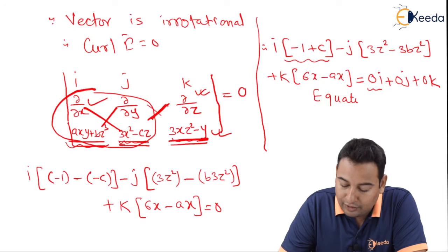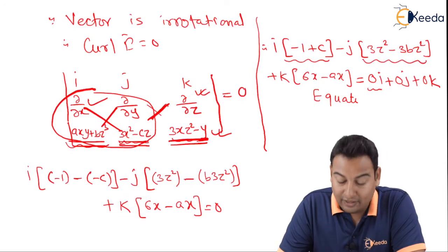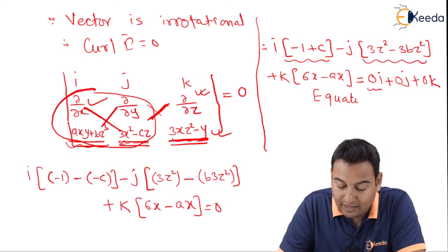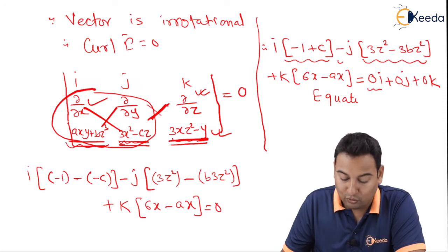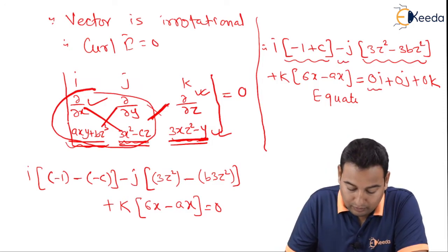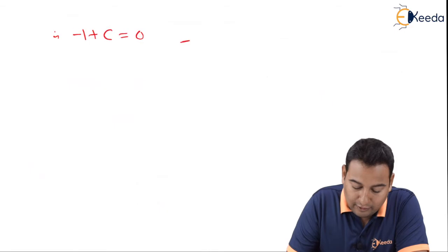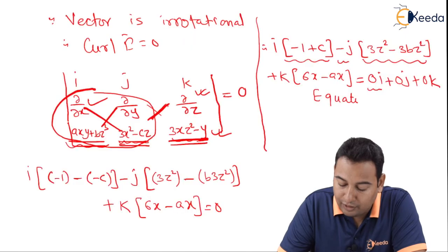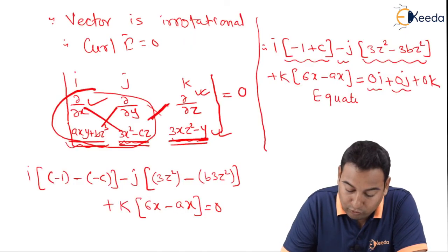With j, here we have 3z squared minus 3bz squared, with this minus also. That is minus 3z squared minus 3bz squared. And with j here we have 0, which is equal to 0.